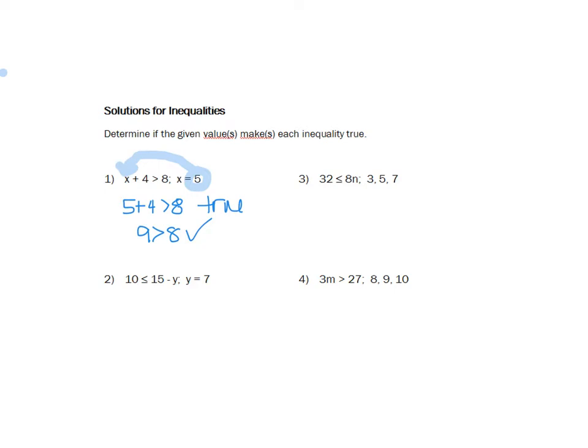Look at number 2. My inequality is 10 is less than or equal to 15 minus y. They're telling me that y is equal to 7, so I'm going to take that 7 and put it in place of y. I have 10 is less than or equal to 15 minus 7. So 15 minus 7 is 8. 10 is less than or equal to 8. That is false. That is not a true inequality.